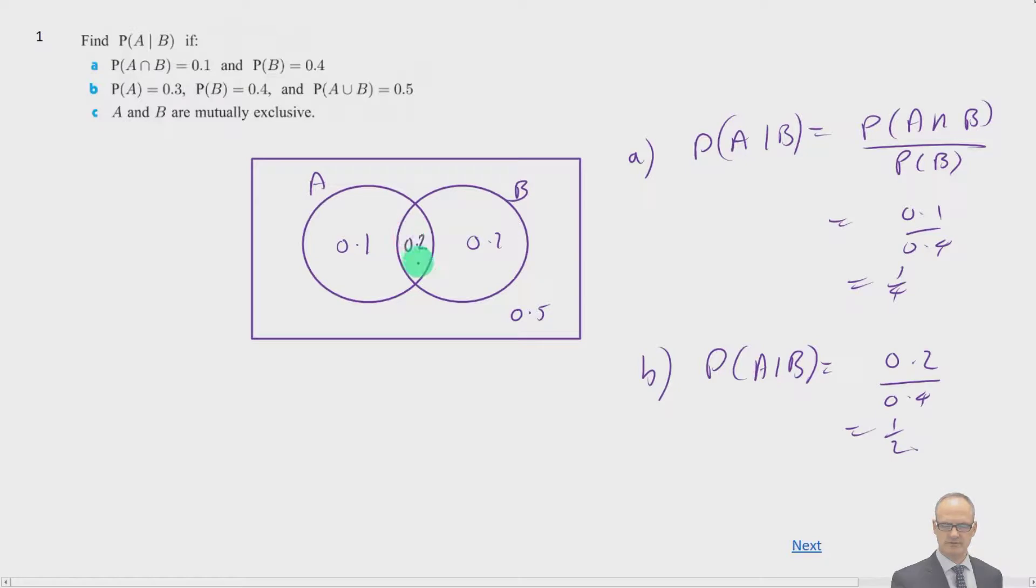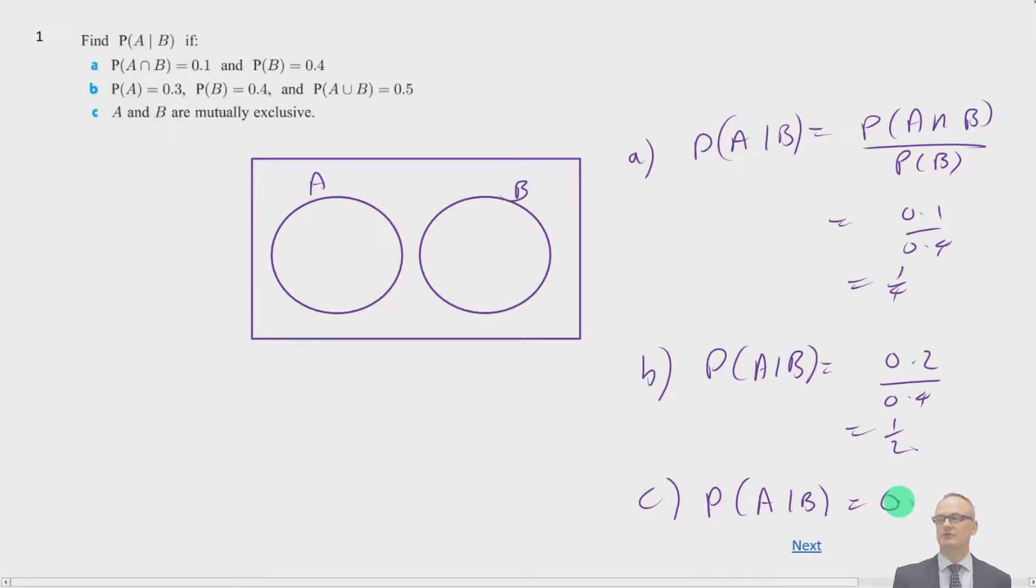We can see these are actually equal. So the probability of getting this, given this has happened, is going to be a half. Given A and B are mutually exclusive. Now if I do that I have a totally different diagram. If they're mutually exclusive, they do not overlap. So it's impossible for A to happen when B happens. So if B has already occurred A can't happen. So P of A given B if they're mutually exclusive will be equal to 0.